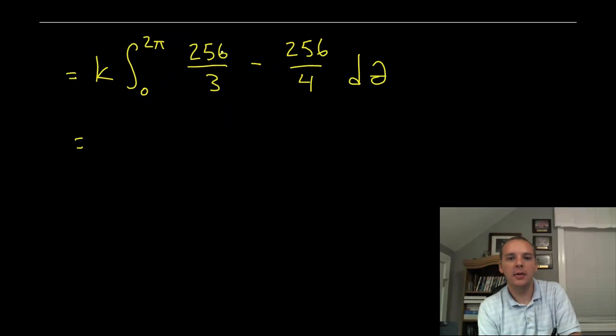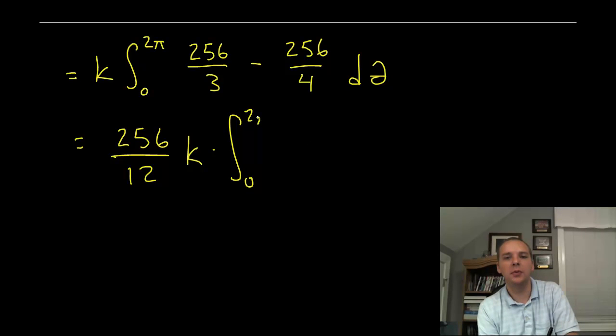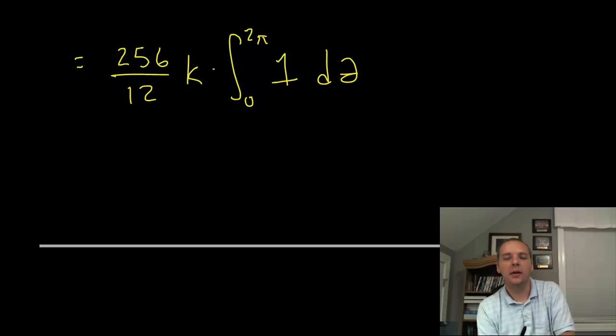Alright little mental math here. Two fifty six over three minus two fifty six over four. That would be two fifty six over twelve. Right two fifty six over twelve. K and you can check my algebra on that. Times the integral zero to two pi of one d theta. Now this last integral is quite simple. You integrate one with respect to theta. You get theta. You plug in two pi you get two pi. Right you plug in zero you get zero. So final answer.